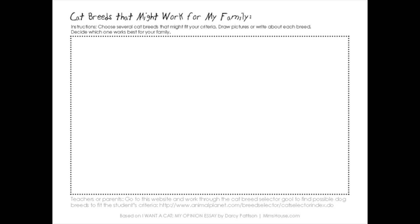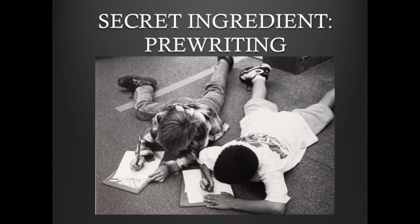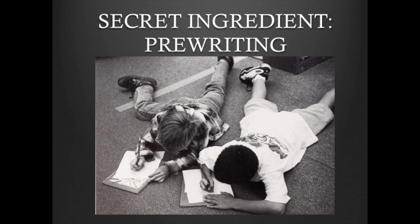At this point you've done a lot of prewriting, so it's time for them to decide what cat breed would work for their family, draw a picture of it, and then write either a dog or cat essay on which breed is best for their family. The secret ingredient, of course, is prewriting — if you do a rich and variable prewriting phase, then the essays will almost write themselves.